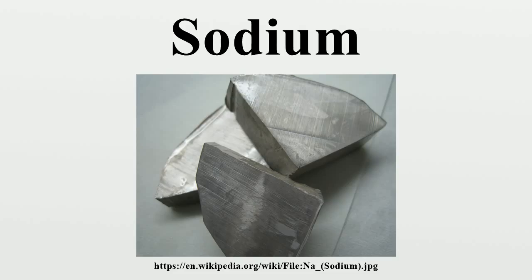Heat transfer: liquid sodium is used as a heat transfer fluid in some fast reactors due to its high thermal conductivity and low neutron absorption cross-section, which is required to achieve a high neutron flux. The high boiling point allows the reactor to operate at ambient pressure. Drawbacks include its opacity, which hinders visual maintenance, and its explosive properties. Radioactive sodium-24 may be formed by neutron activation during operation, posing a slight radiation hazard; the radioactivity stops within a few days after removal from the reactor. If a reactor needs to be frequently shut down, NaK is used due to it being liquid at room temperature, so cooling pipes do not freeze. The pyrophoricity of potassium means extra precautions against leaks must be taken.